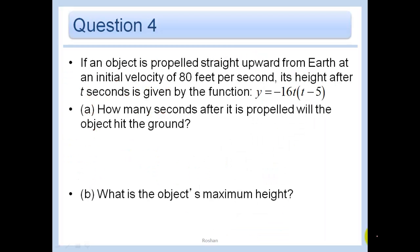If an object is propelled straight upward from Earth at an initial velocity of 80 feet per second, its height after t seconds is given by this function here. How many seconds after it is propelled will the object hit the ground? The object will hit the ground when this y is 0. It hits the ground when y equals 0. It hits the ground when the height is 0. That's when it's on the ground.